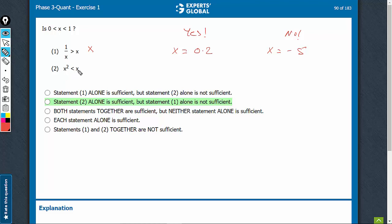Statement 2, you can solve it intuitively. You will realize that yes, this leads to an answer that x is between 0 and 1. Mathematically, if you were to solve, you know x square minus x is less than 0 and therefore, x into x minus 1 is less than 0.